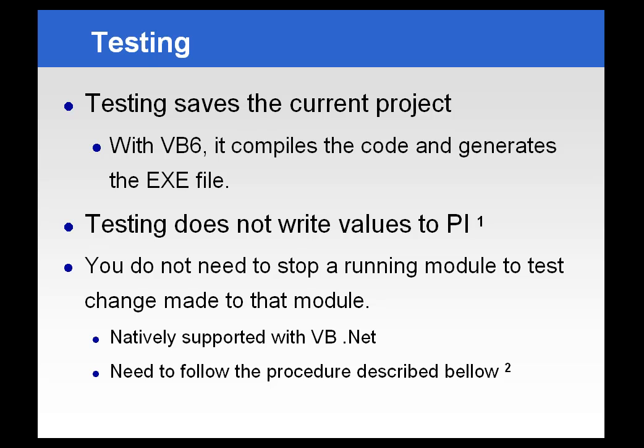There is one other small difference when you're using the different development environments. If you're using .NET Studio, because you're simply compiling DLLs and running them against a master executable, you don't need to stop the executable to test any changes. However, if you're using Visual Basic 6, VB6 will not let you change an executable while it's running, so you will need to take the executable out of service in order to do any additions, changes, or testing. There is a procedure to get around that if you absolutely can't stop the executable, which you can find in the book. But for the most part, you will have to stop the executable in the ACE manager when dealing with Visual Basic 6, while with .NET you will not be required to do that.